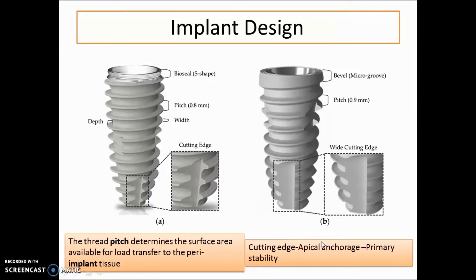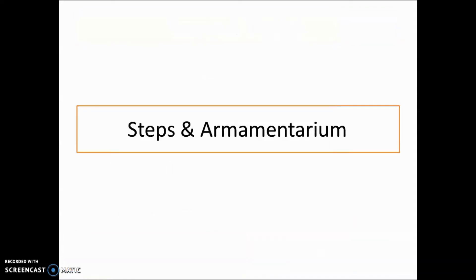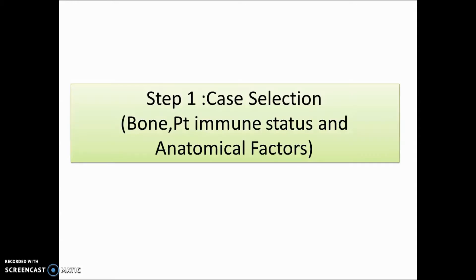The steps and armamentarium involved in implant placement begin with case selection. You must check the patient's bone level, immune status, and anatomical factors — where the sinus is located, whether the inferior alveolar canal or incisive canal is present, and how much bone is available — before proceeding.